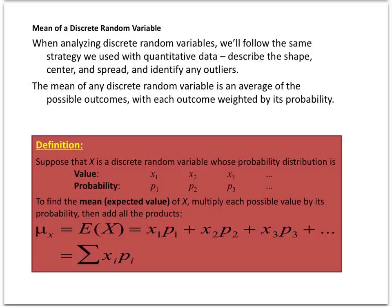When you describe discrete random variables, we use the same strategy as for quantitative data — describe the shape, center, spread, and identify outliers. When you're looking at graphs of probability distributions, think the same way we did with data.